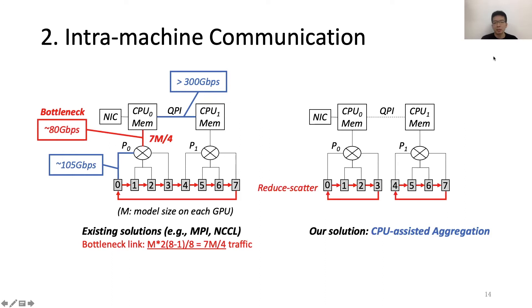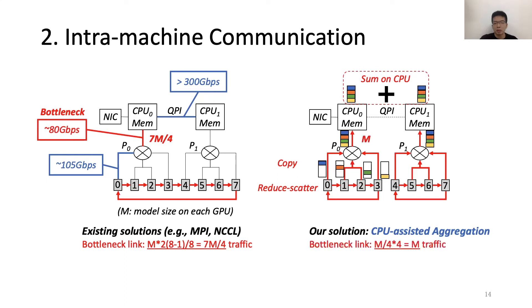Our solution addresses this problem using a technique called CPU-assisted aggregation. And it contains several steps. First, it lets the 4 GPUs under the same PCIe switch to perform a local reduce-scatter operation, so that each GPU will have a quarter of the aggregated gradients. Next, each GPU copies its quarter to the host memory. And now there are two copies of complete gradients on the host memory, and each from an individual NUMA node. So we need to sum up these two copies using CPUs. We can see that the traffic on bottleneck link is now only equal to m, since we have avoided the cross-NUMA GPU communication.